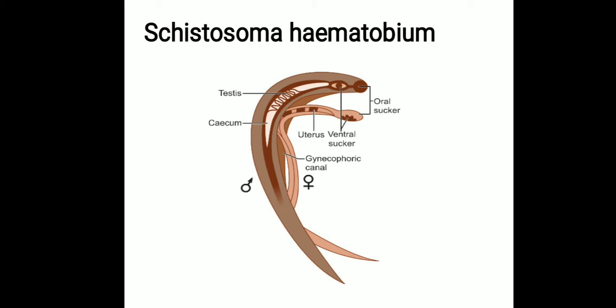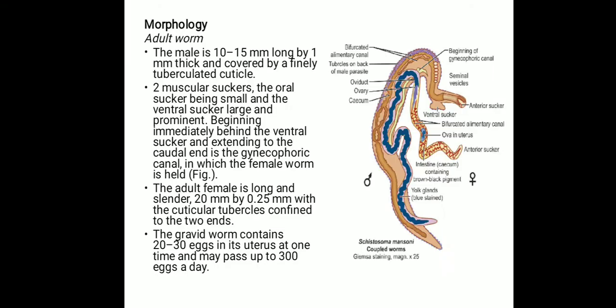Regarding the habitat of this parasite, the adult worm resides in the vesicle and pelvic plexus of veins. Coming to the morphology, we have the adult worm and the eggs. In the adult worm, we have male and female forms. You can refer to the diagram given here. In the case of the male, it is longer compared to the female.